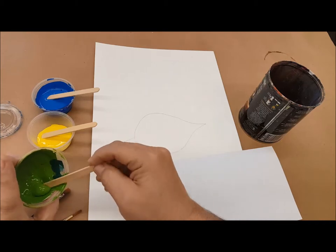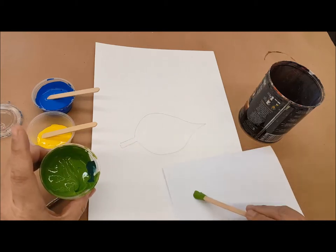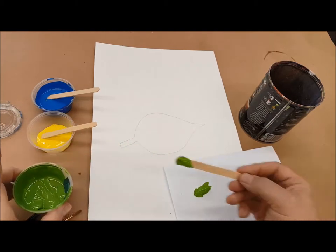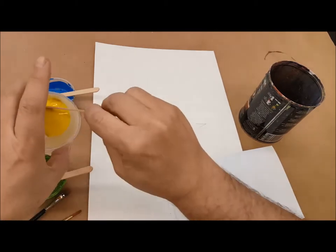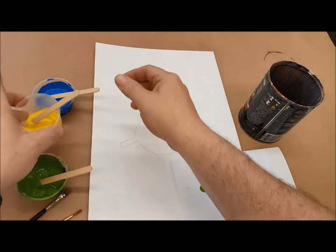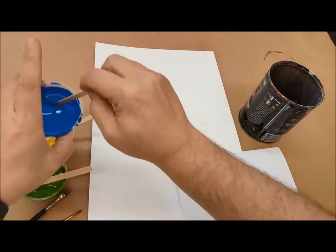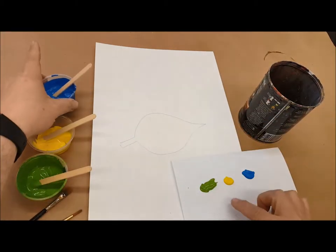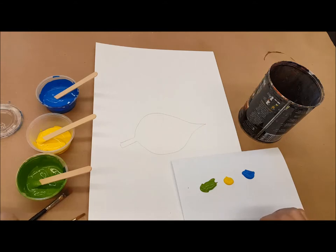So my main color is going to be green. Go ahead and put that on my paper. I'm going to use yellow to make my highlights and blue to make my shadows. I'm not taking a ton of paint. About the size of a nickel or a quarter there is all I need.